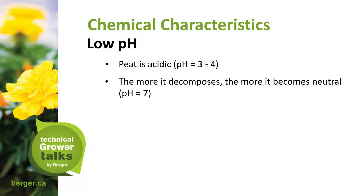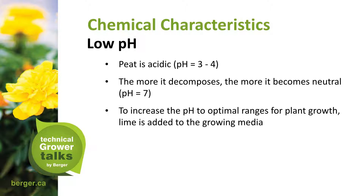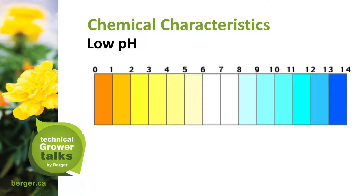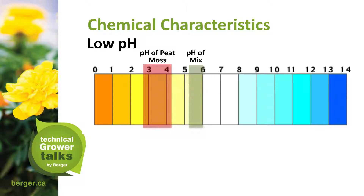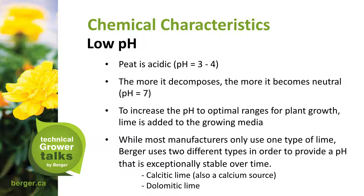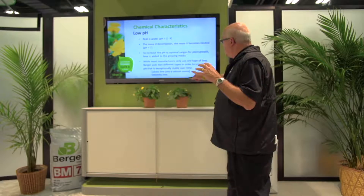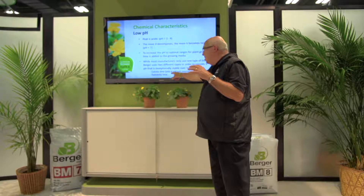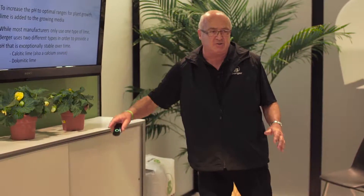To increase the pH to an optimal range, lime is added to the growing media. While most manufacturers use only dolomitic lime, they also use gypsum — but gypsum doesn't change pH, it adds calcium and sulfate. We add calcitic lime in superfine form to reach our seven-day equilibrium, then rely on the residual action of dolomitic lime, which also adds magnesium.